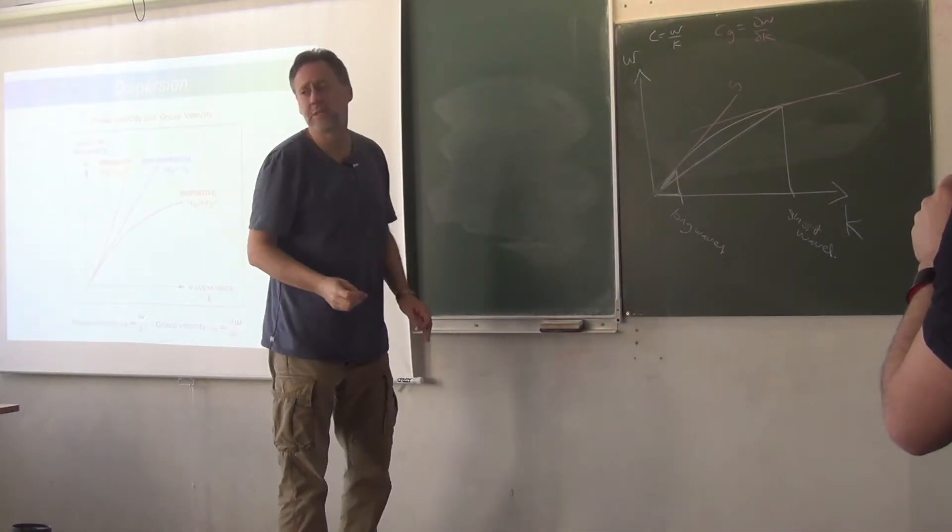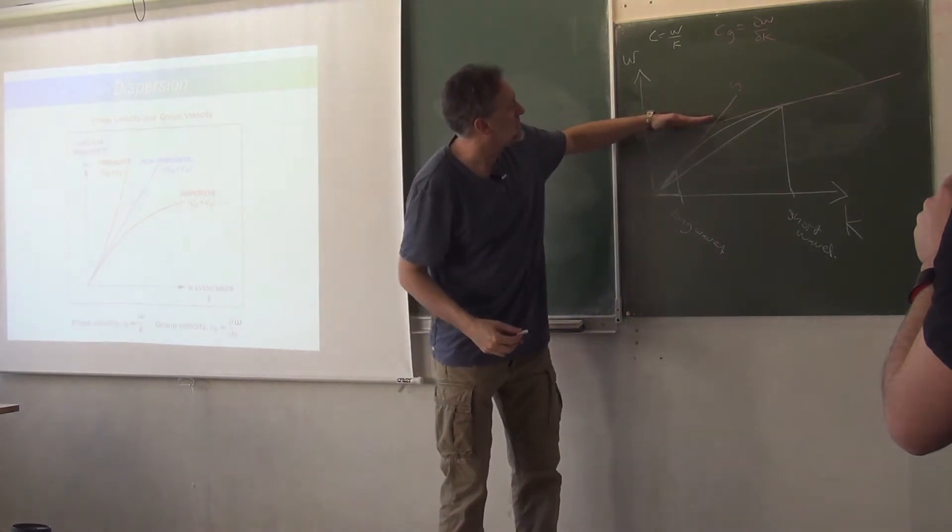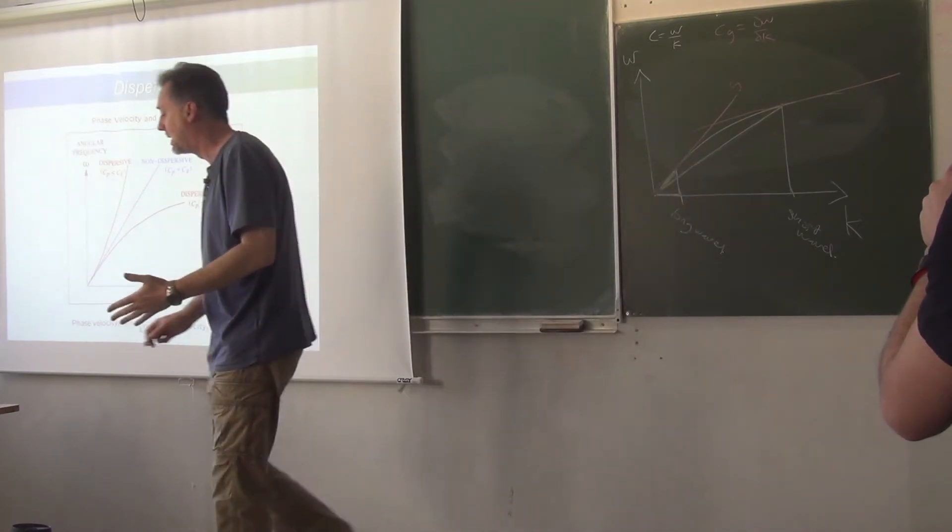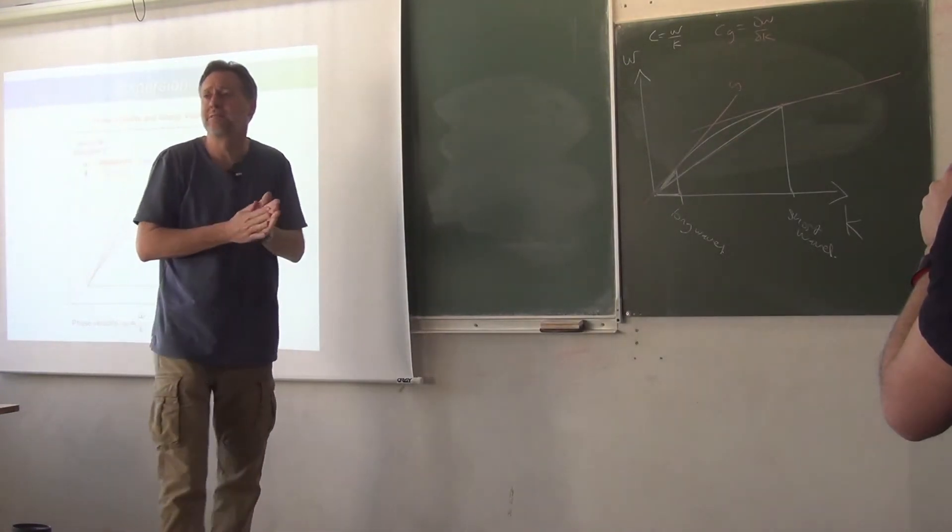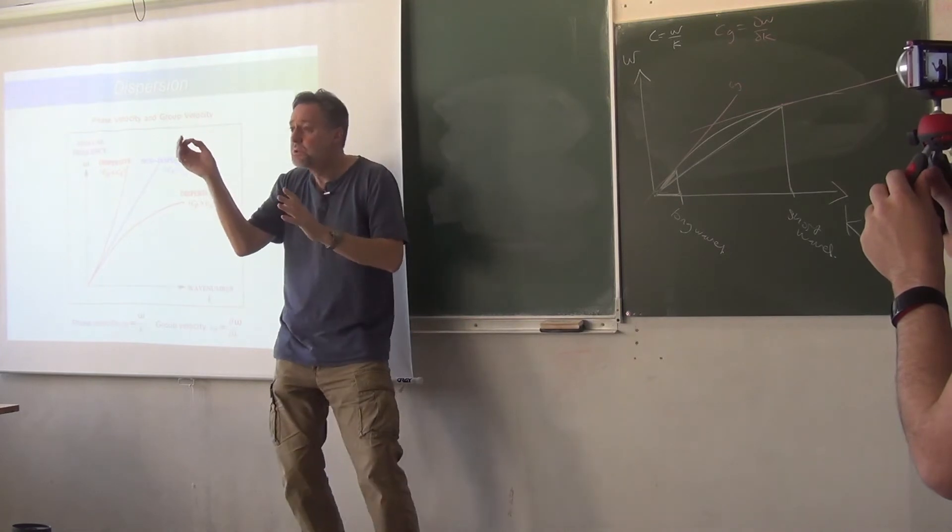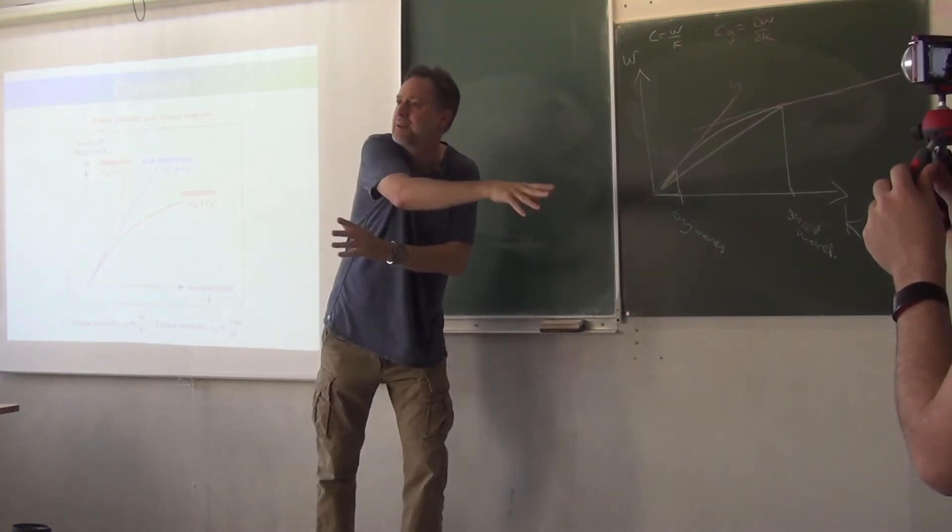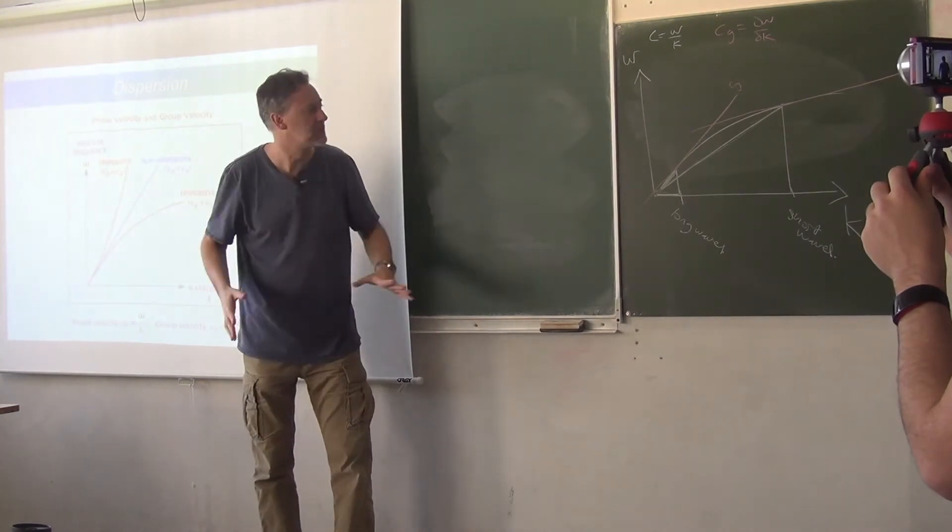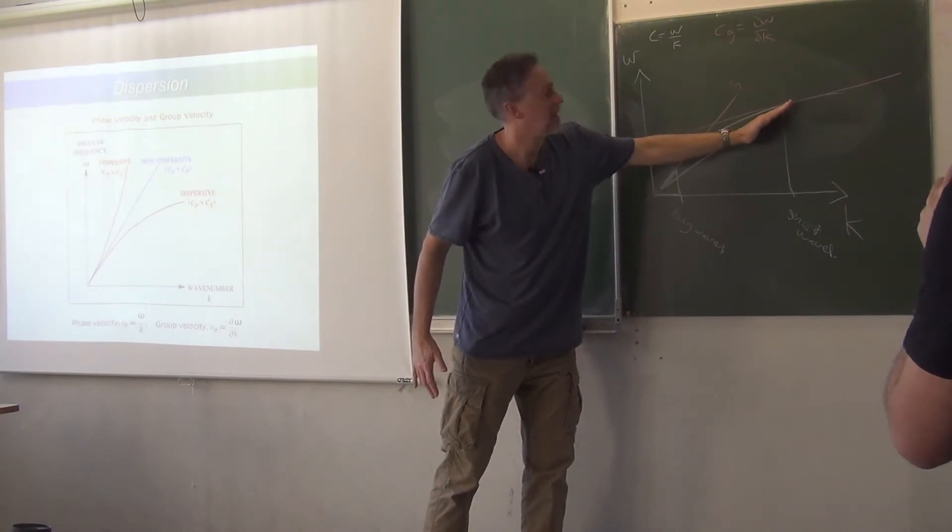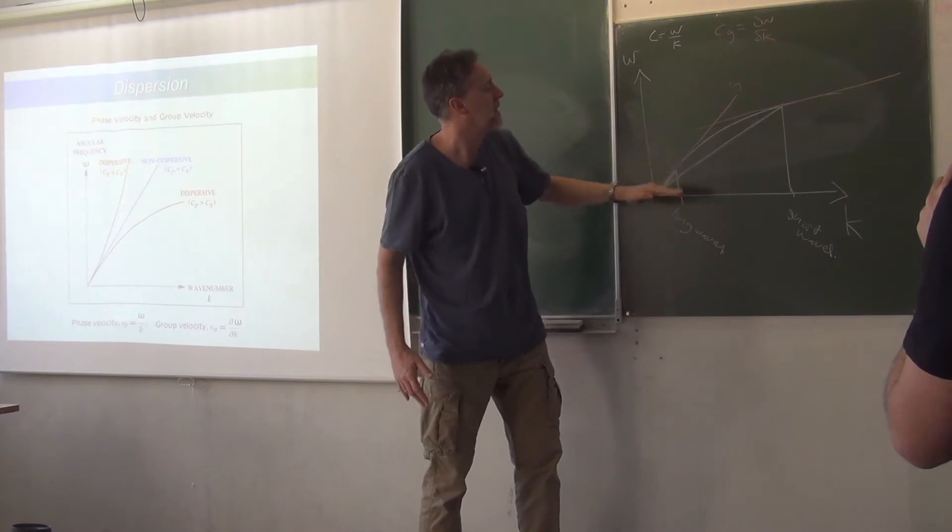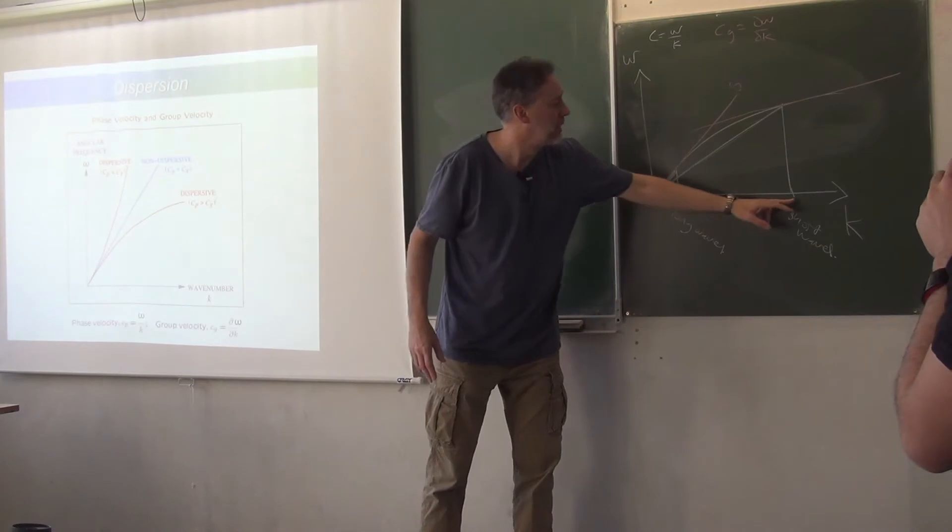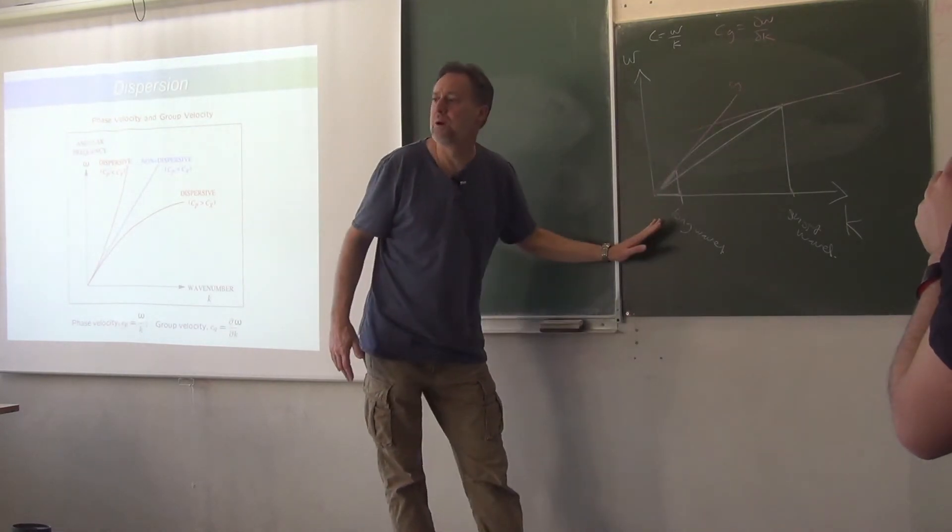So, what can we say about the group speed? Well, we can say that it's less than the phase speed, which is what we saw, which is what I said before. I said that the modulation packet is slower than the individual wave crests that travel through it. So, the modulation packet goes slower than the waves themselves. The group speed is slower than the phase speed. And it's also a function of wavelength. So, again, for group speed, the modulation packets associated with short waves are slower than long waves.